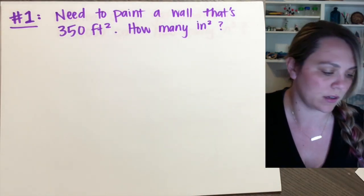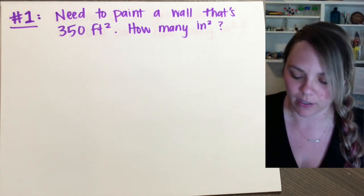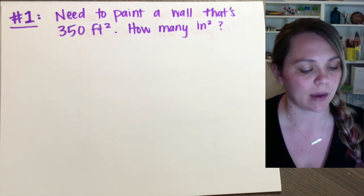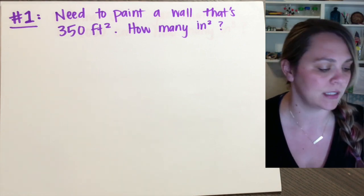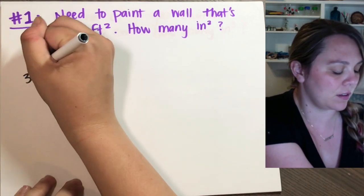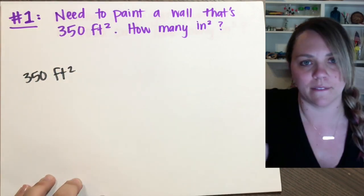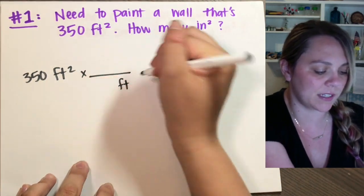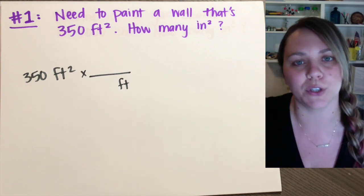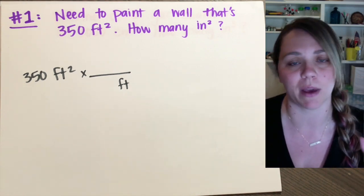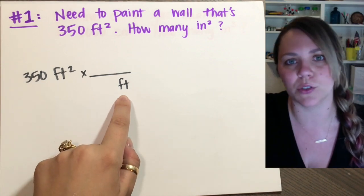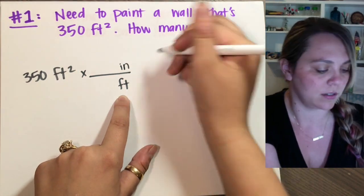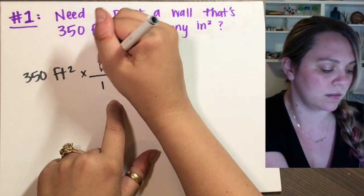If you have to paint a wall that is 350 feet squared, how many inches squared is that? Step one, start with your given: I'm given 350 feet squared. I need to get to inches squared, which means I need to convert out of feet. If you look at any of your conversion lists, or if you are given conversions in the back of your periodic table, you're not going to have a foot-squared conversion. Instead, you'll have a feet-to-inch conversion: one foot equals 12 inches.